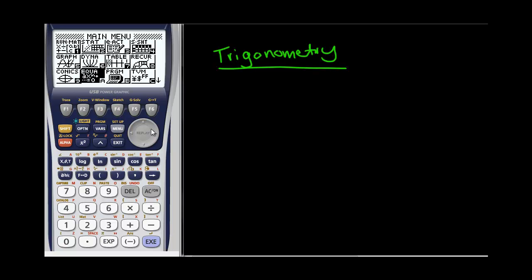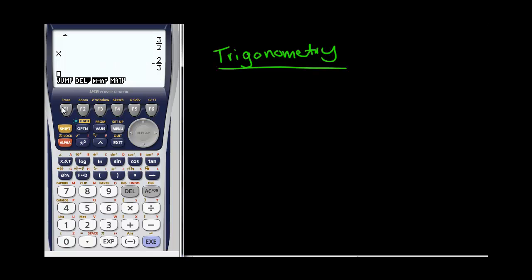For any of the questions you can just use it as a normal scientific calculator by using the run mode. So if you've got something where you need to find the value of, let's say, sin 40, we simply type in sin 40, press equals, and it gets you that amount. So you just use it as a normal calculator.